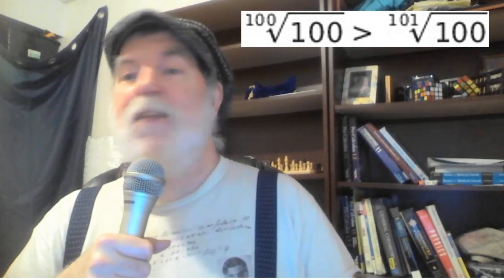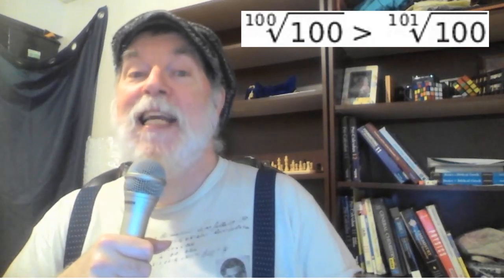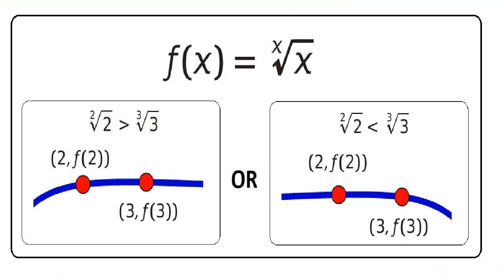However, none of the highfalutin calculus gets us anywhere. Because x equals 2 and x equals 3 straddles that maximum point. And we don't really know enough about the shape of the function to know which one of these is larger.